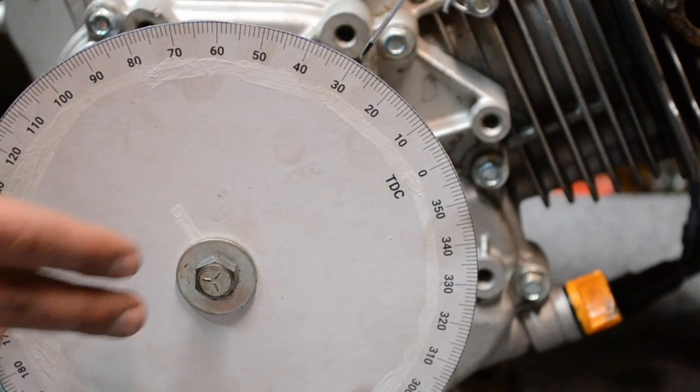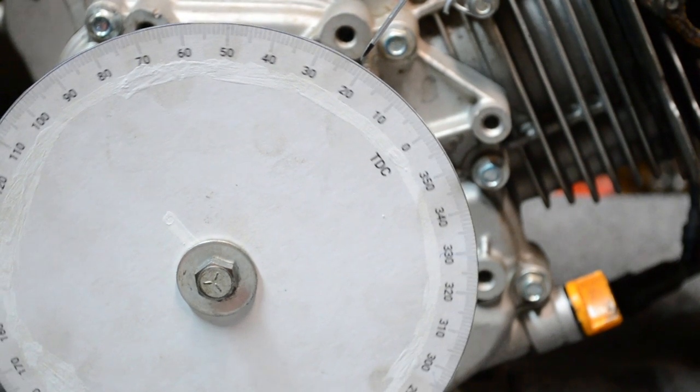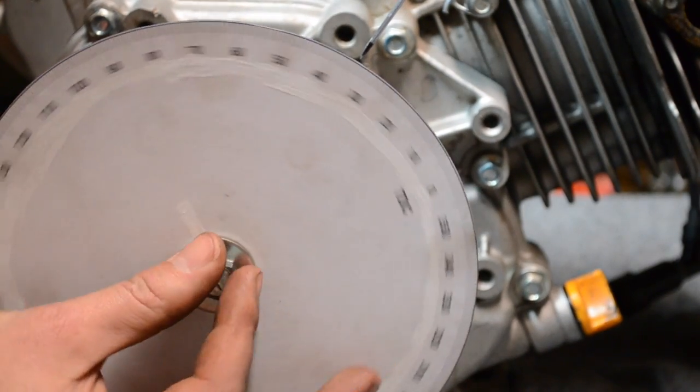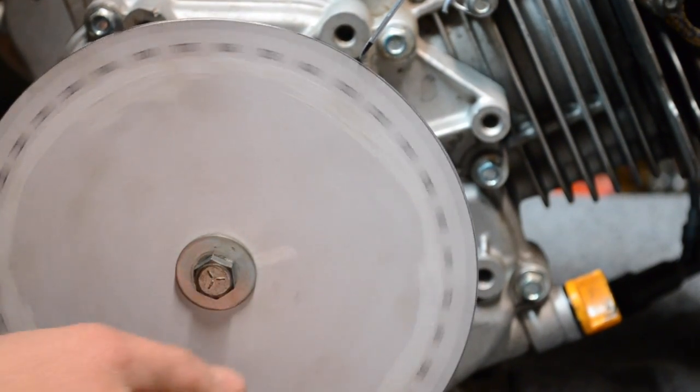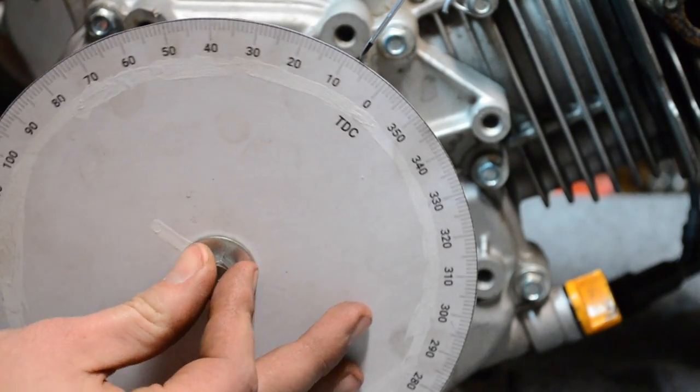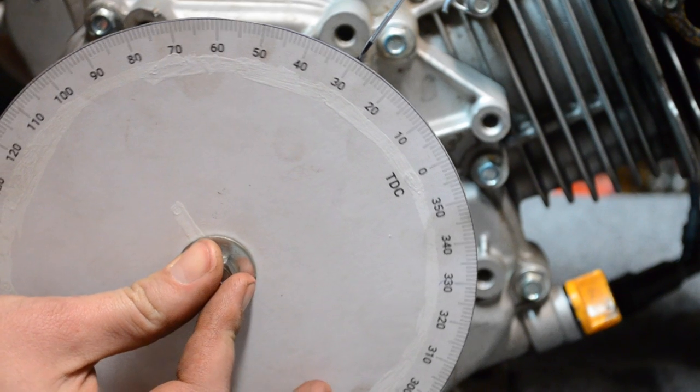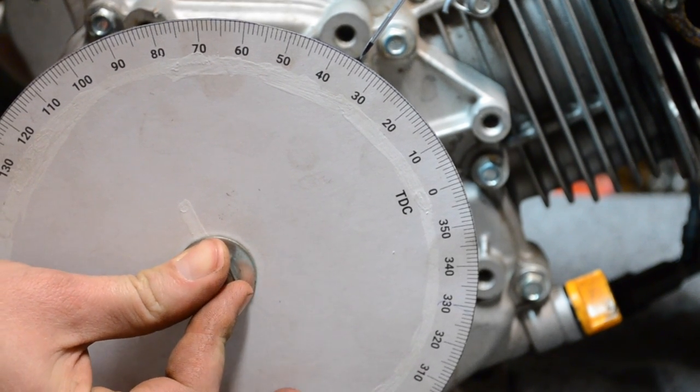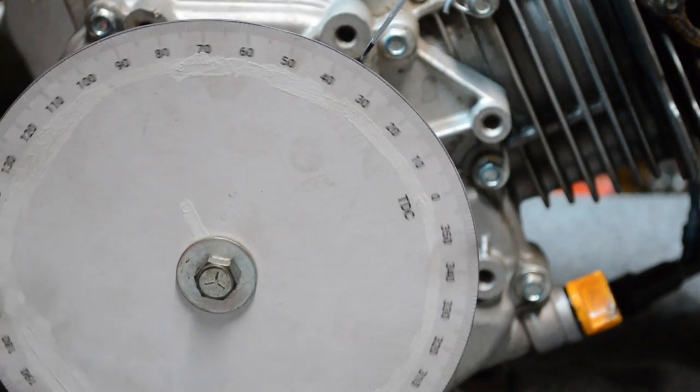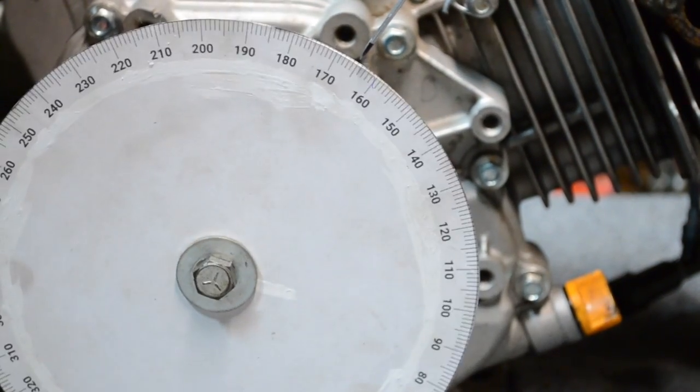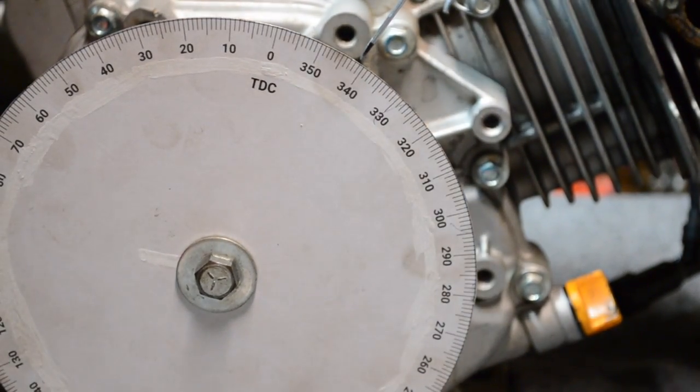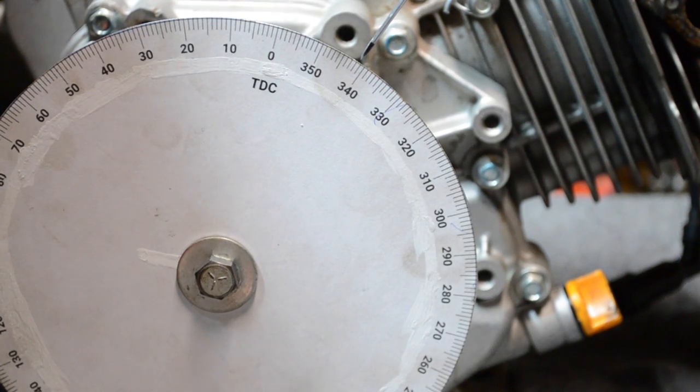Now that we've installed the degree wheel and the pointer, rotate your engine until the piston comes to a stop against the piston stop and then set an approximate location past zero. We're going to set this one at 35, so mark 35 on there. Rotate your engine the opposite direction until it comes to a stop against the piston stop one more time. It looks like that marking is 18.